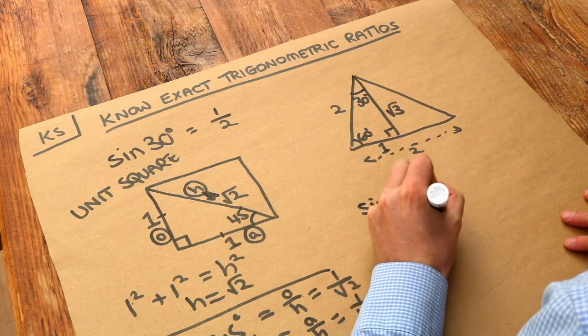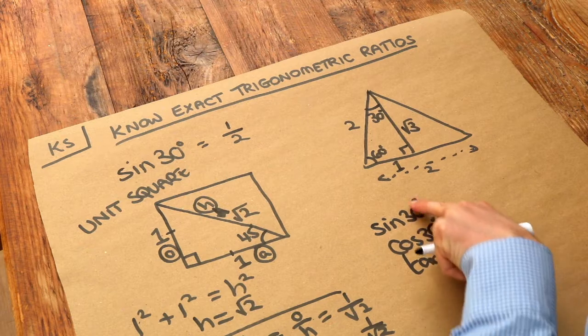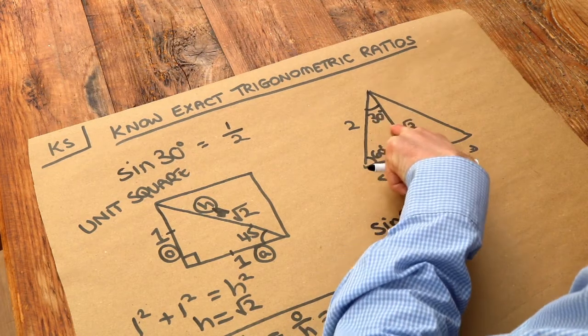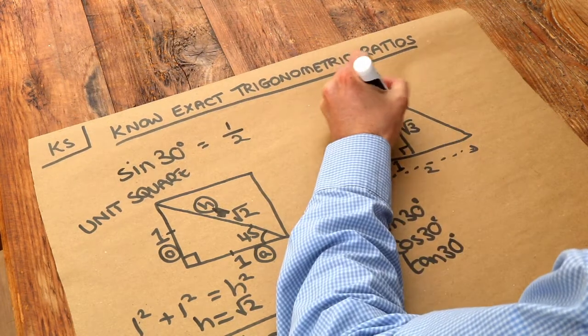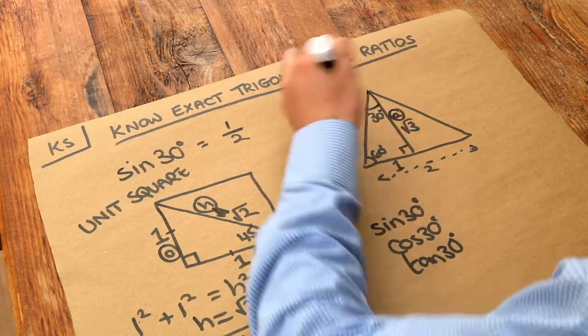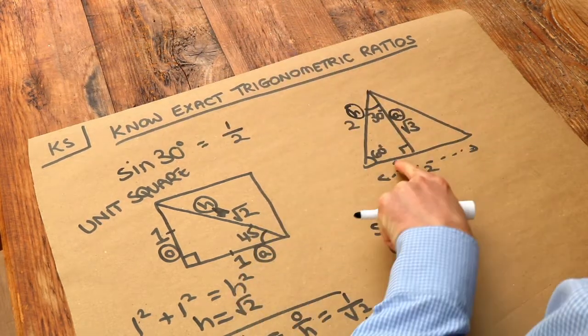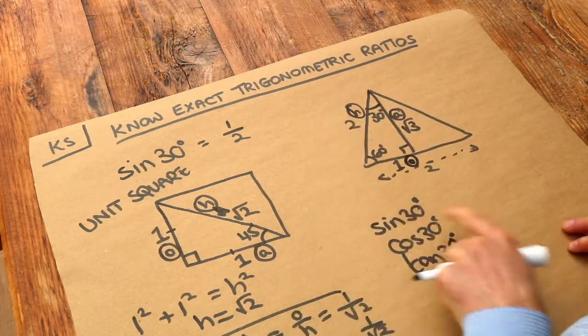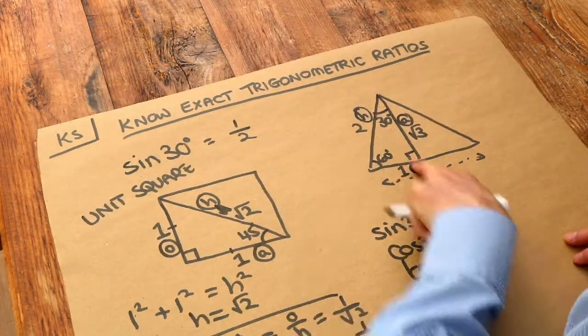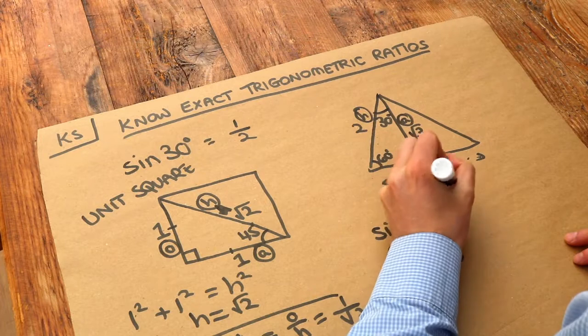So if we label the sides relative to the 30 degrees, this is adjacent to that 30. This is the hypotenuse, so 2. And then this is opposite the 30. So then sine of 30 is O over H, 1 over 2. So sine of 30 is half.